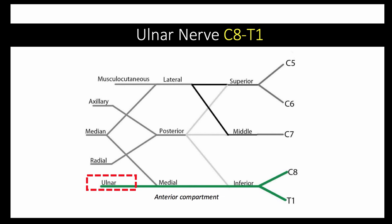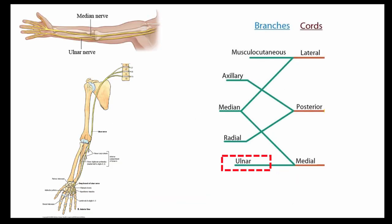That leaves us with the last of the high yield terminal branches, the ulnar nerve. The ulnar nerve contains fibers from the C8 to T1 spinal roots of the brachial plexus. The ulnar nerve descends down the medial aspect of the upper arm and at the elbow passes posteriorly to the medial epicondyle before entering the forearm.